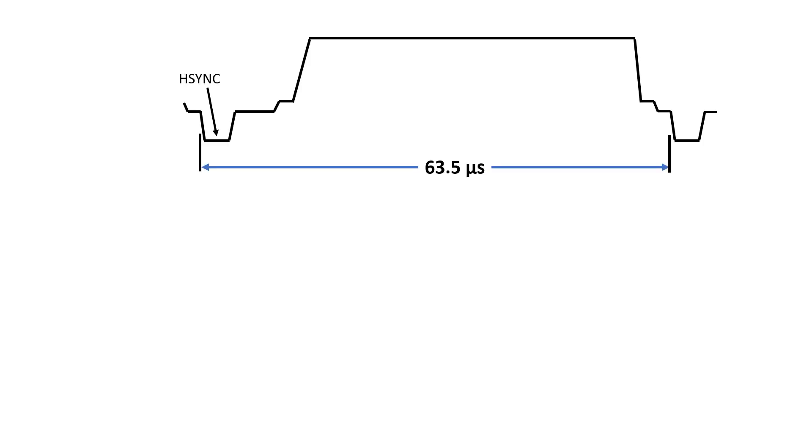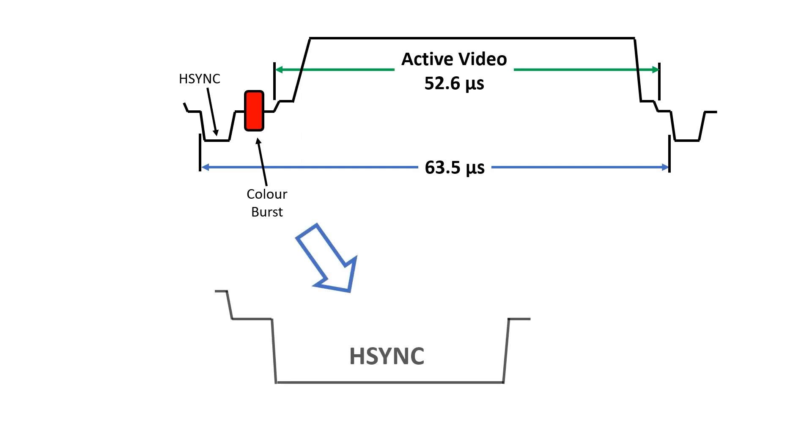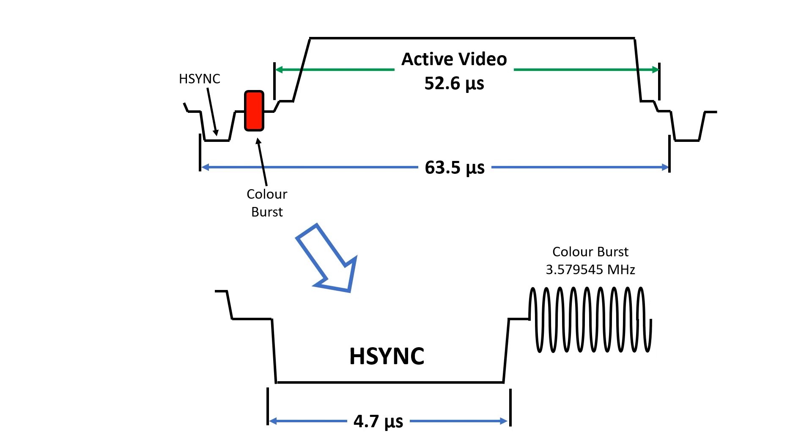If we have a look at our scan line again, the color burst is this short signal in our horizontal back porch. So it occurs before we start to get any active video. Let's look at it in a bit more detail. We have our old friend, the HSYNC signal. And shortly after that, we get 9 cycles of this 3.579545MHz signal. Then some clever electronics inside the television synchronizes the internal clock to the phase and the amplitude of the color burst.